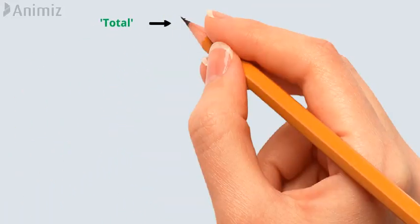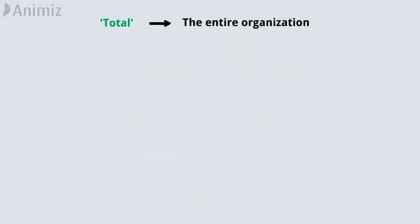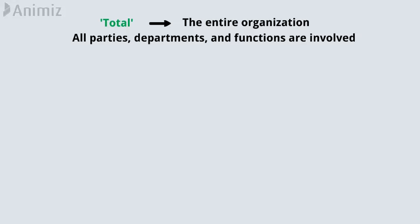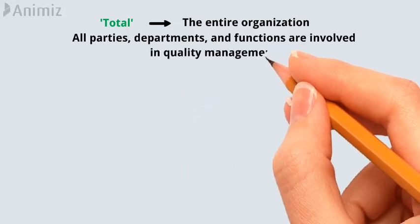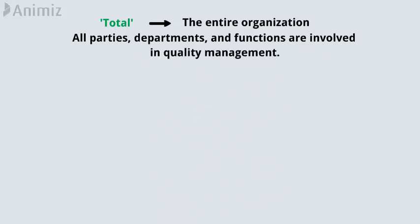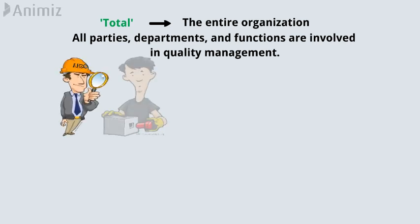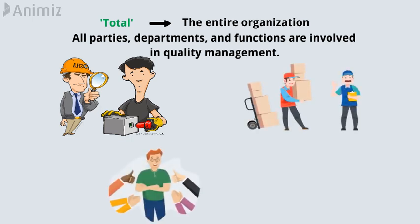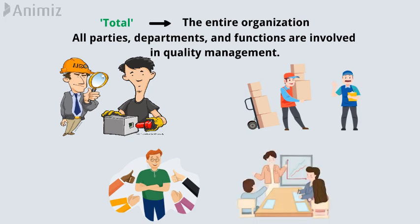The term 'total' defines the entire organization — all parties, departments, and functions are involved in quality management. TQM is the continuous process of detecting and reducing or eliminating errors in manufacturing, streamlining supply chain management, improving the customer experience, and ensuring that employees are up to speed with training.